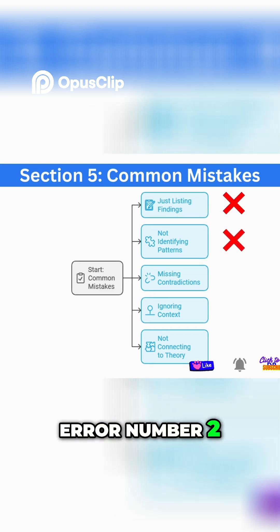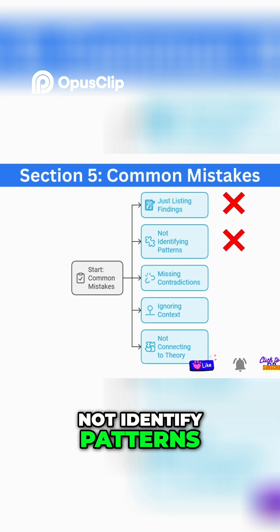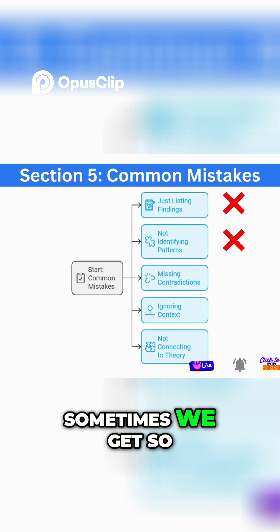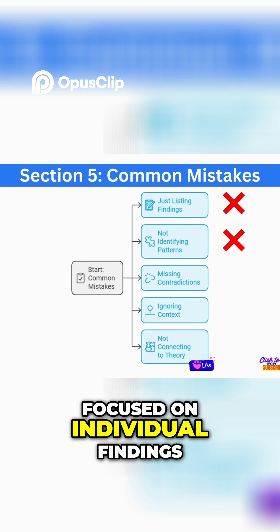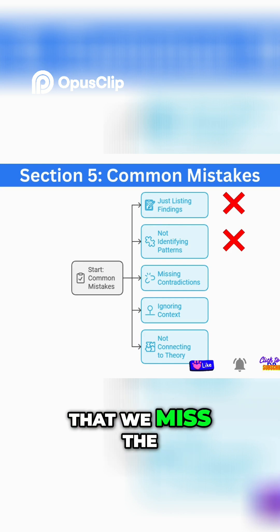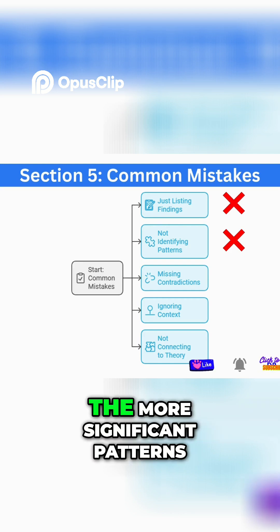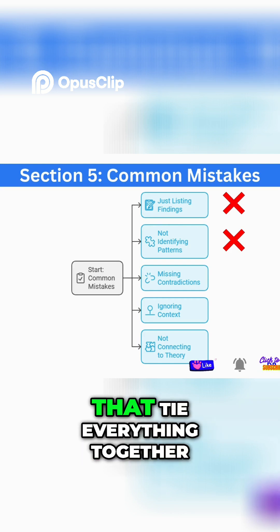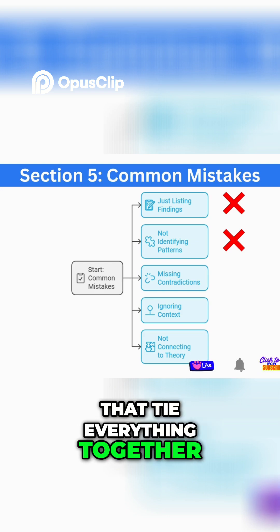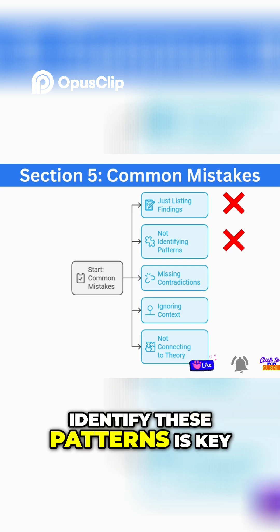Error number two: not identifying patterns. Sometimes we get so focused on individual findings that we miss the more important, more significant patterns that tie everything together. Identifying these patterns is key.